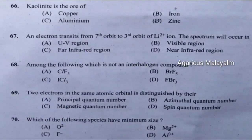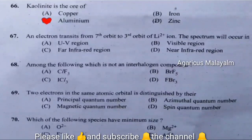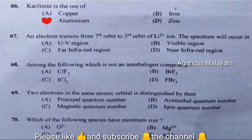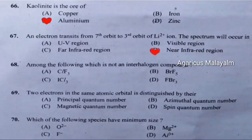Sixty-sixth question: Corunite is the ore of. Correct answer is option C — aluminium. Sixty-seventh question: An electron transits from seventh orbit to third orbit of lithium ion. The spectrum will occur in option D — near infrared region.